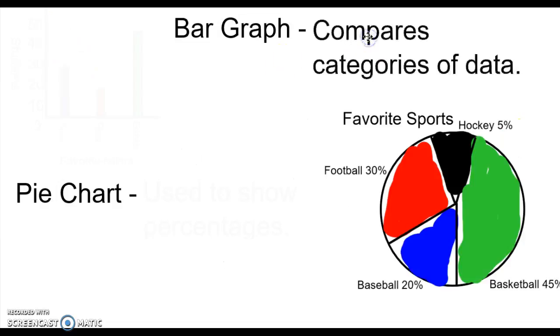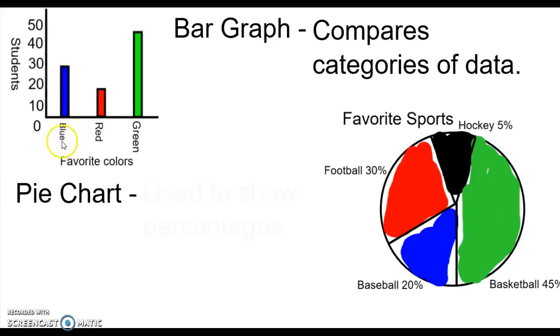A bar graph compares categories of data. So if your independent variable is not quantitative, these are words, not numbers. We would use a bar graph for this to show different colors.